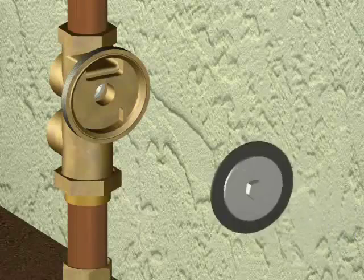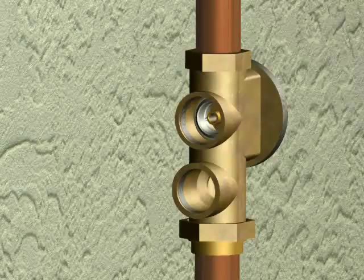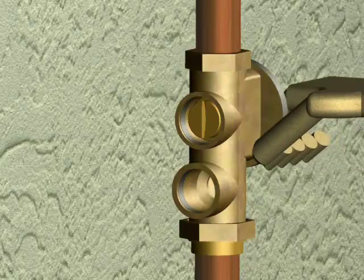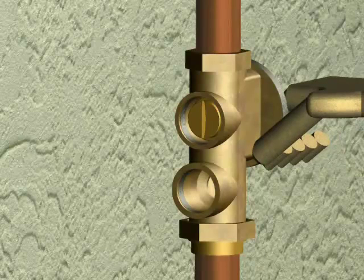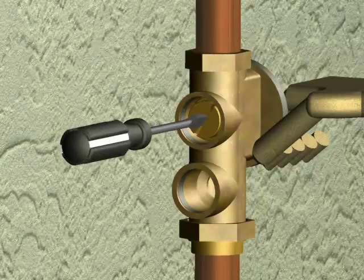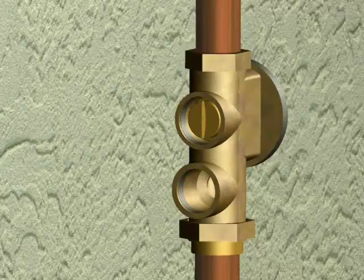Insert the stem assembly into the body. Center the washer on the plunger, then thread into the stem assembly. Hold the diaphragm against the edge of the body to prevent it from rotating. Tighten the plunger, but do not over-tighten as it is possible to break the threaded end.